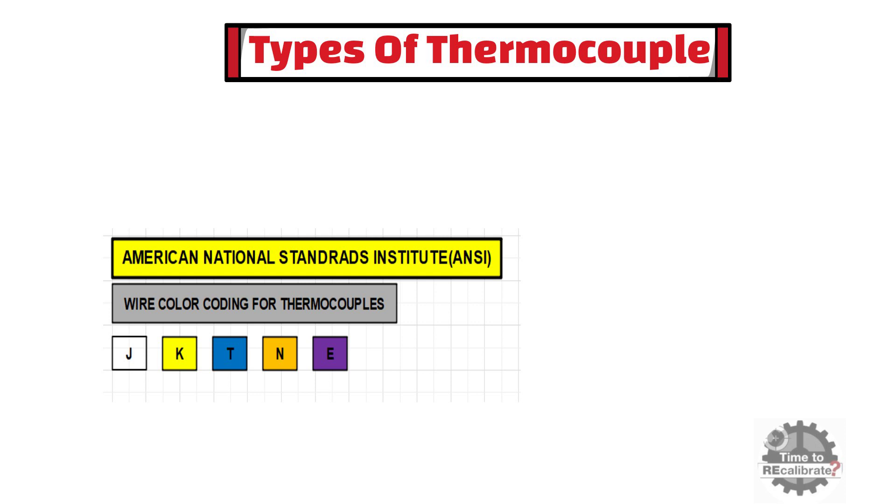As you can see from the picture, there are mainly five types of thermocouples. And you can simply identify thermocouple type by identifying insulation color of wires of thermocouples.